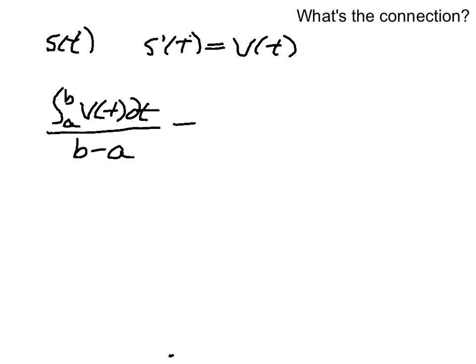Well, by the fundamental theorem, which you better know at this point, the integral of velocity actually is going to take us back to s of t. So this actually, by the fundamental theorem, is going to be s of b minus s of a over b minus a.